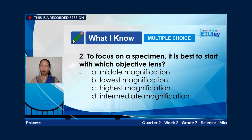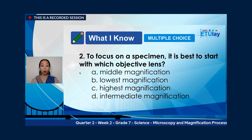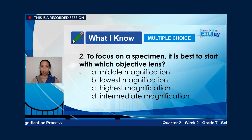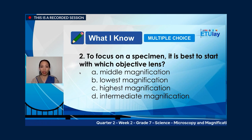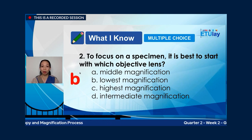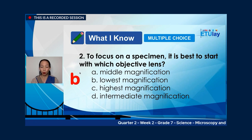Number two: to focus on a specimen, it is best to start with which objective lens? A, middle magnification; B, lowest magnification; C, highest magnification; or D, intermediate magnification? The correct answer is letter B, lowest magnification. Remember to always begin with the lowest magnification.